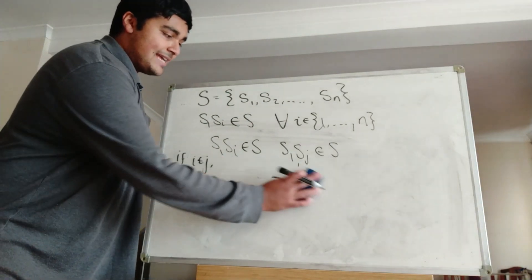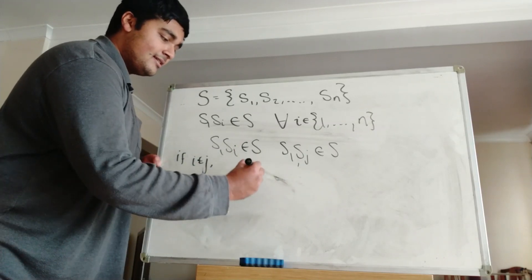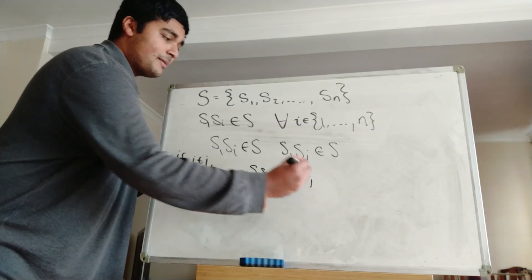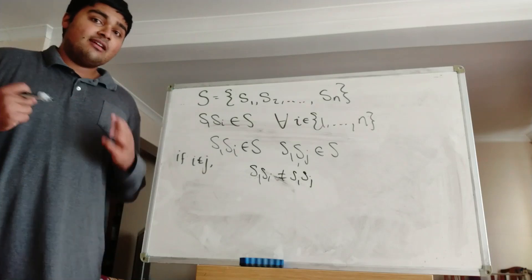So we know that S1 times SI must be distinct from S1 multiplied by SJ when I and J are distinct.